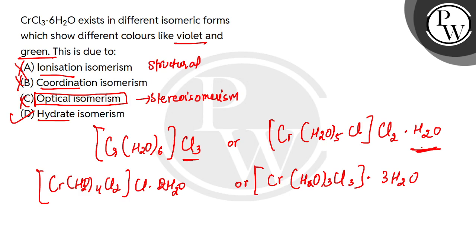For coordination isomerism, cation and anion are both coordination complexes. But in this case, it is not possible.